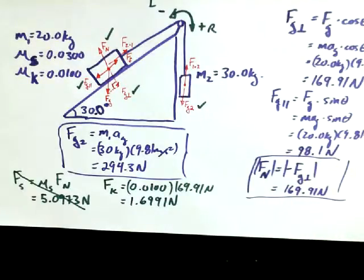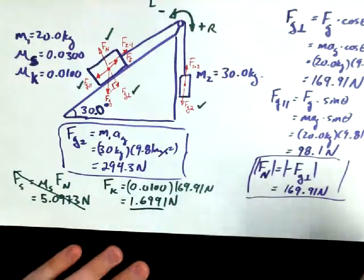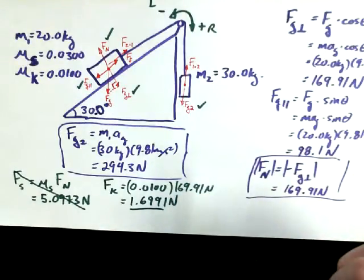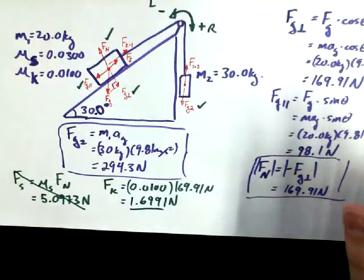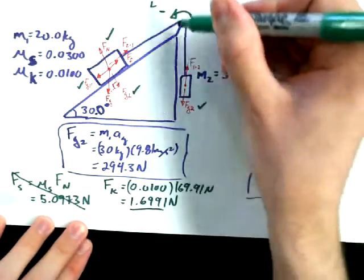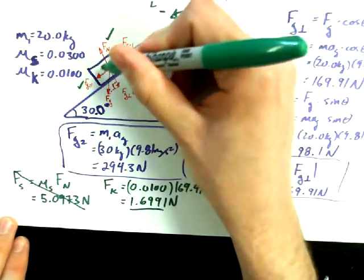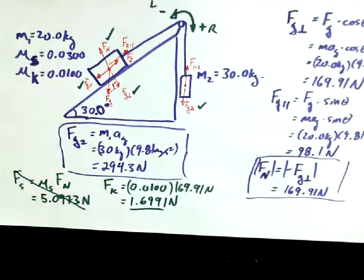And now I should really calculate the kinetic friction. 0.0100 times 169.91 newtons. What's a one-hundredth of 169.91? 1.6991 newtons is the kinetic friction force, which is like barely anything compared to this system.